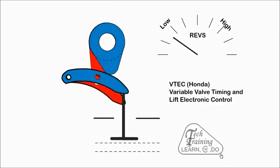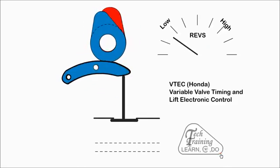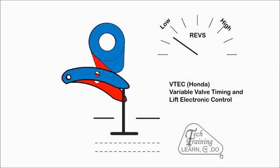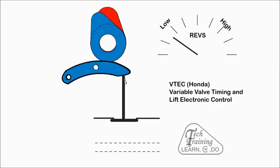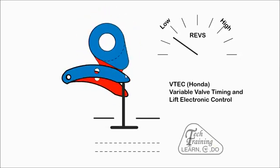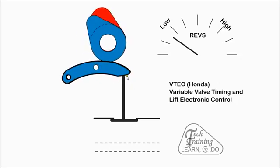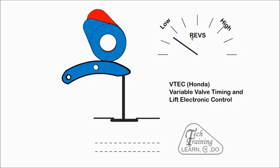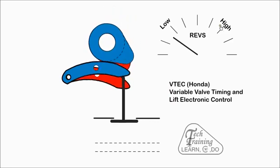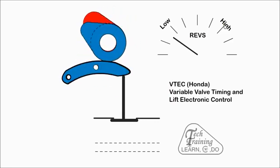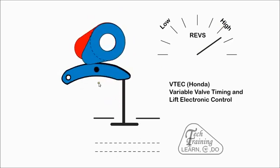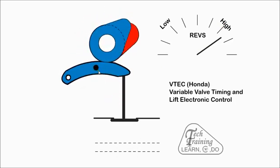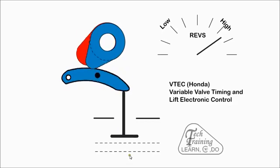With VTEC, the camshaft has two separate lobe profiles. The valve is in contact with the blue rocker arm at low speed. The camshaft operates on the standard profile for efficiency. At high speed the pin is activated by oil and the rockers are joined together when they are aligned, thus altering the timing and lift for maximum power.